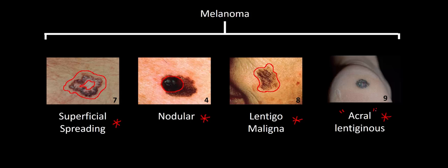Finally, acral lentiginous melanoma occurs on acral surfaces such as the fingers, toes, feet, hands, or nail beds — in this case shown on the bottom of someone's foot near the heel. These melanomas can be easy to miss given their unique location. An important epidemiological point is that in African and Asian populations, the proportion of melanomas that are acral is much higher than in other populations, making screening for acral melanomas especially important in individuals from these groups.